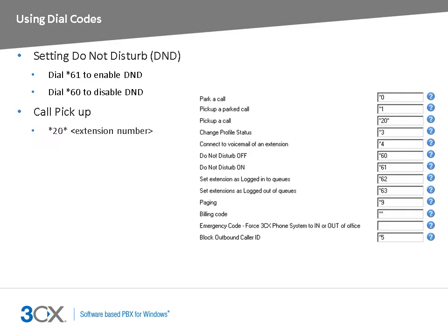Alternatively, you could also retrieve the call from a ringing extension without specifying an extension number. To do this, dial star 20 star followed by the send key, and the first waiting call will be redirected to your extension. Note that your administrator may limit call pickup for extensions within the same extension group.